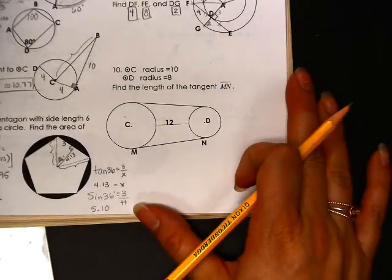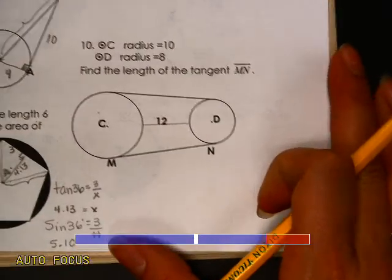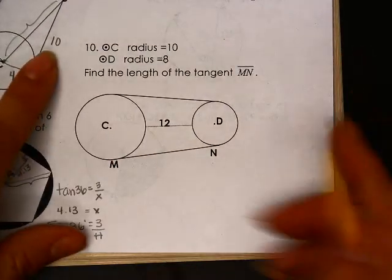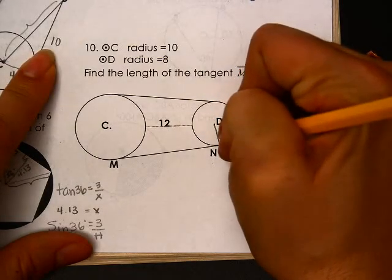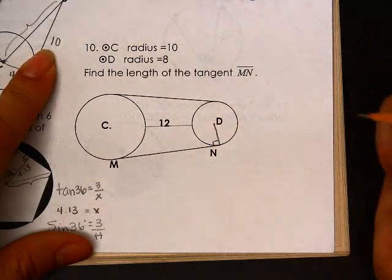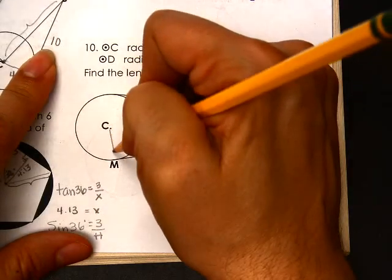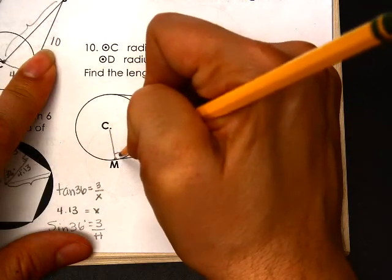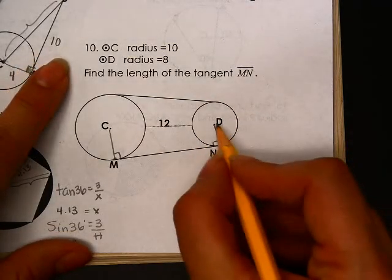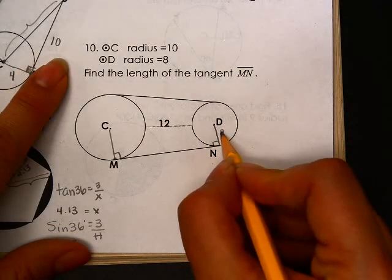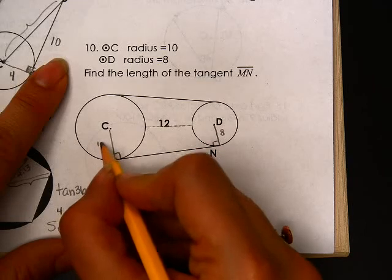Let's go ahead and look at number 10 here. So first of all, it says that this is a tangent. So if I were to connect it to the radius, that would be 90 degrees at the point of tangency. And if I were to connect that to the radius, that would be 90 degrees at the point of tangency. And I know that this radius was 8. And I know that this radius was 10.